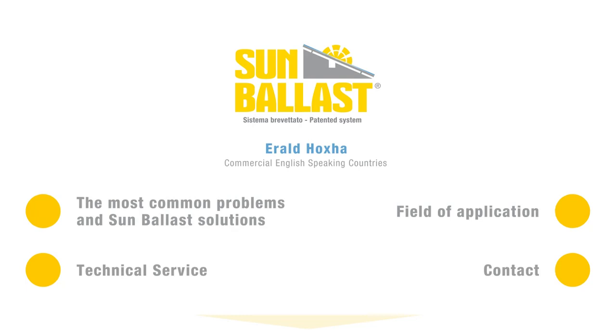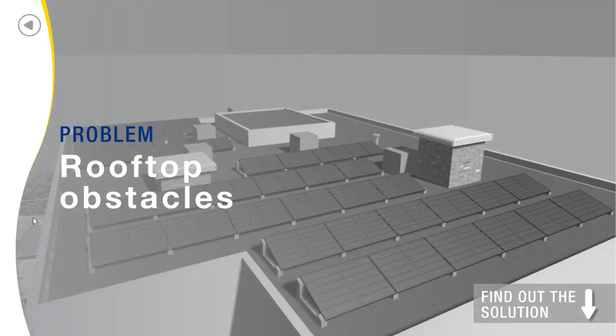Let us look together at the first problem that we can encounter: rooftop obstacles, or obstacles on the cover, such as chimneys, skylights, antennas, lifelines, or air-conditioning engines. If you have had any of these kinds of difficulties, I present to you the right solution.